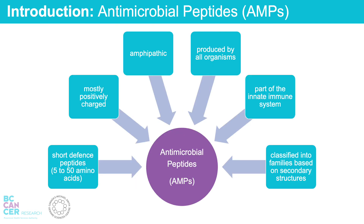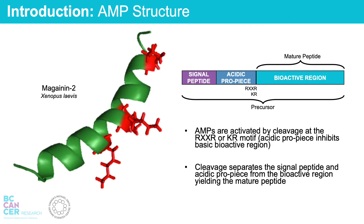What are antimicrobial peptides? Antimicrobial peptides, or AMPs for short, are host defense peptides. These peptides are short, between 5 and 50 amino acids long, often positively charged, and amphipathic in nature. AMPs are produced by all organisms and act as part of the innate immune system. AMPs are also classified into different families based on their secondary structures and disulfide bonds. An example of such a class by secondary structure is the alpha helix of this amphibian AMP shown on the left, called meganin-2, where the positive residues are shown in red.